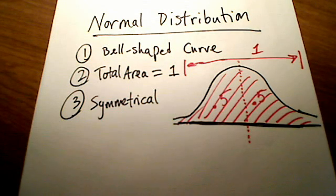So those three things should come to mind when you hear the words normal distribution: bell-shaped, total area is 1, and it's symmetrical.